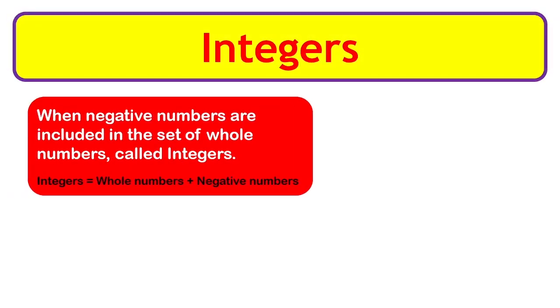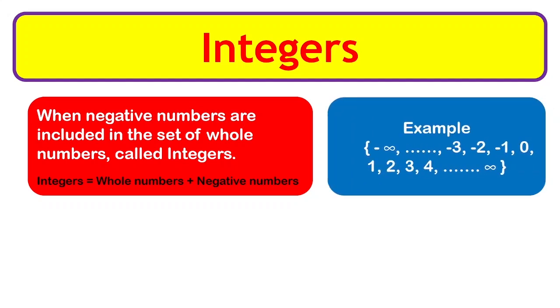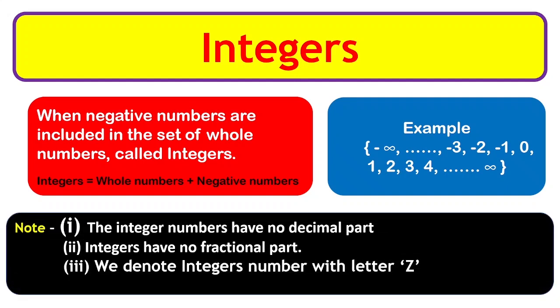Integers: when negative numbers are included in the set of whole numbers, it is called integers. Integers equal whole numbers plus negative numbers. Example: -3, -2, -1, 0, 1, 2, 3, 4. Integers can be negative and positive. Notes: integers have no decimal part and no fractional part. We denote integers with the letter Z.